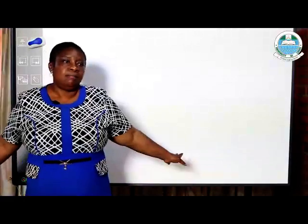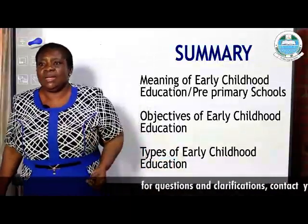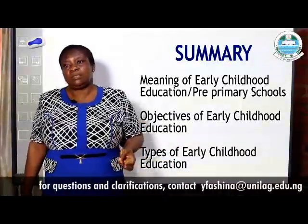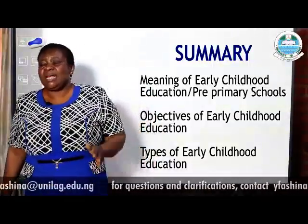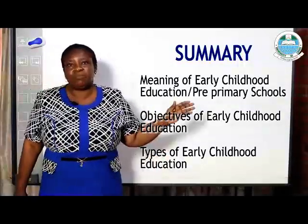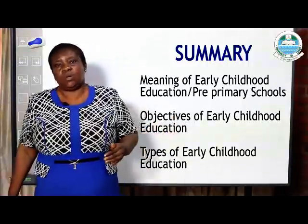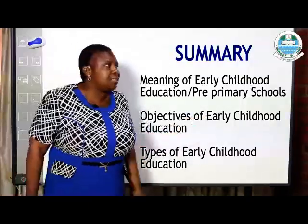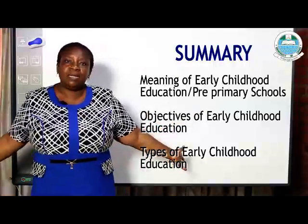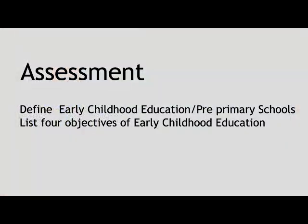Let us look at the summary. At the end of this lecture, you should have been able to identify the meaning and definition of Early Childhood Education, the objectives of Early Childhood Education — also known as pre-primary education, which are the same thing — and the types of Early Childhood Education: daycare, nursery education, kindergarten, and the special or exceptional schools. Thank you.